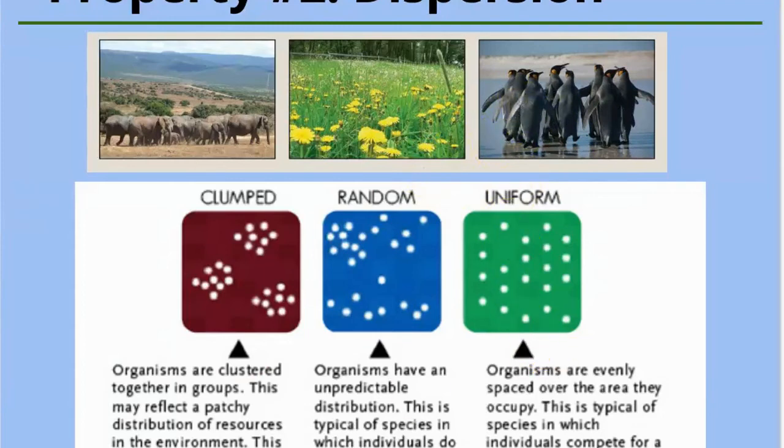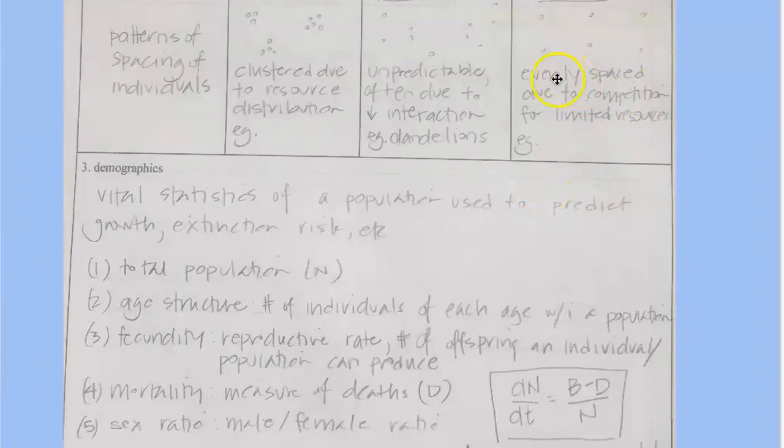So penguins are living in an area where resources are scarce and organisms occupy a given area because that's where the resources are. And the particular environment can't support more organisms. You'll see uniform spacing of deciduous trees and forests and actually trees in general, because a large tree will take up a certain amount of resources.